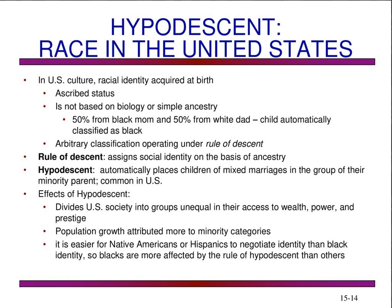The effects of hypodescent divide US society into groups unequal in their access to wealth, power, and prestige — something being brought to the forefront in national media today. Population growth is attributed more to minority categories than majority categories, and it is easier for Native Americans and Hispanics to negotiate identity than it is for African Americans. Black people are more affected by the rule of hypodescent than other racial categories.